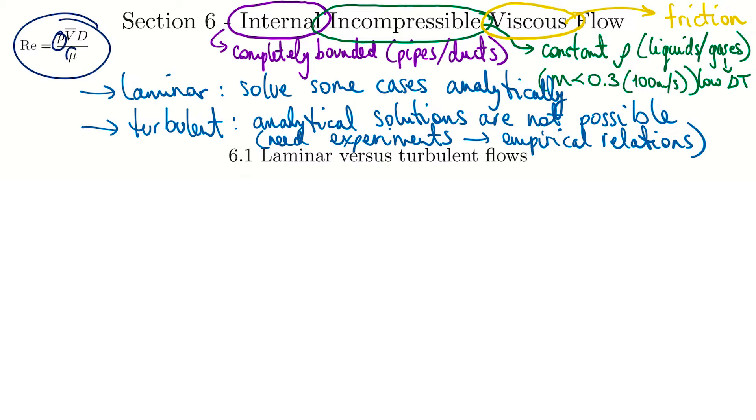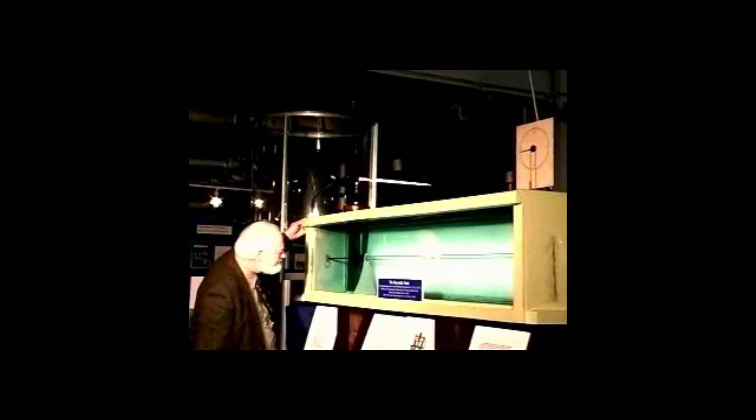In these experiments, the same fluid and tube diameter are used, so Reynolds number changes are accomplished by changing velocity — starting at low velocity, then increasing it. Now watching the experiment: we're looking at a clear tube with fluid flowing through it. Dye is released down the center of the pipe. The velocity starts off slow — low Reynolds number. As it speeds up, we see a transitional zone with waviness, and then eventually full turbulence, with mixing across the channel.